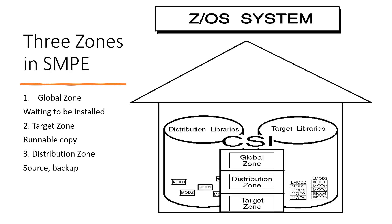In SMP we always talk about three zones. The first one is the global zone. Each SMP data set contains a single global zone, and this zone is an index to its associated target and distribution zones in the SMP data set. It also contains entries that describe the changes waiting to be installed and system utilities. The actual receive operation happens in the global zone.